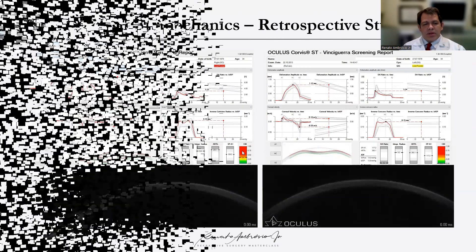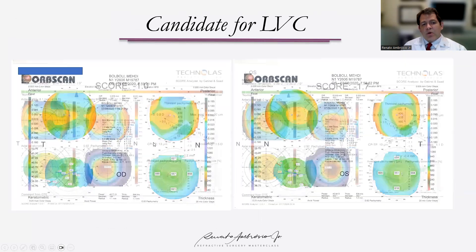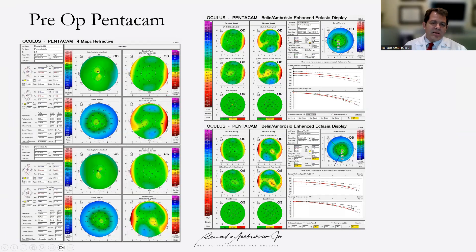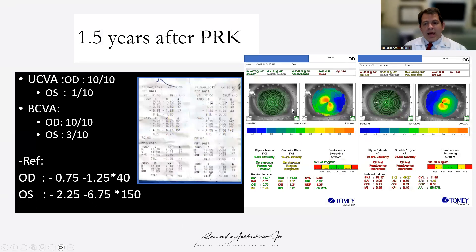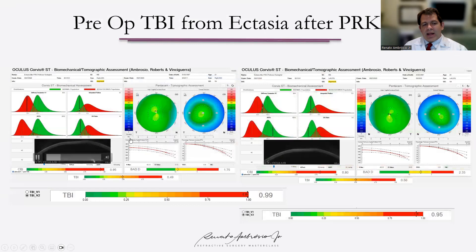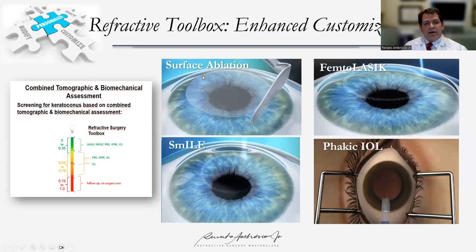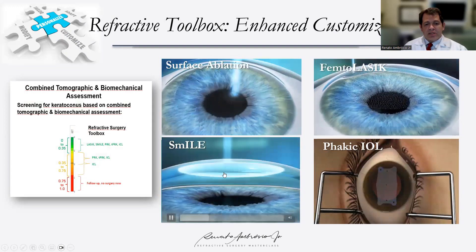We learned that ectasia susceptibility can be predicted. Another case: a 23-year-old with no family history of keratoconus, normal topography, and very low corrections. This patient had everything normal on the OrbScan and topography, though the D map was a little abnormal. When I saw this patient in a Zoom meeting, I said I would wait because of age. The patient had PRK and it led to ectasia in both eyes. Retrospectively, the biomechanical analysis could calculate the TBI V1 and V2 — a very interesting demonstration of ectasia susceptibility. When thinking about laser vision correction, the TBI is my way of understanding if the patient is a good candidate for LASIK, SMILE, surface ablation, or phakic IOL.